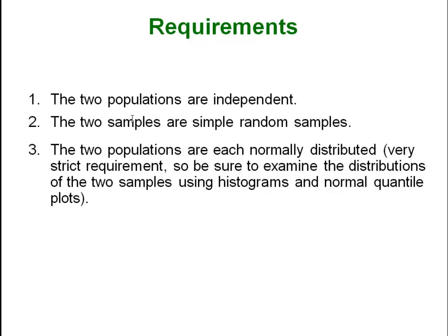The requirements: the two populations have to be independent and the two samples have to be simple random samples. But then the two populations each have to be normally distributed — this is a very strict requirement. You should be doing histograms and normal quantile plots on your data always to make sure they are normal before you run an F test. If there is any departure from normality your results are hugely suspect. There are procedures that allow us to still run hypothesis testing for two variances when we don't have a normally distributed population.